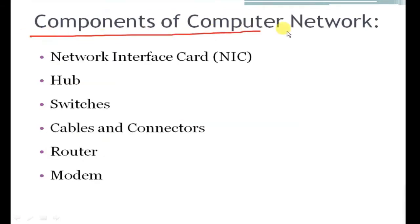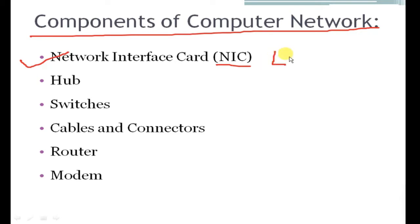Components of a Computer Network: we will discuss which components can be found in a computer network. The first component is the Network Interface Card, which is called NIC. Another name is Ethernet Card. This device has three names: Network Interface Card, Ethernet Card, or LAN Card.